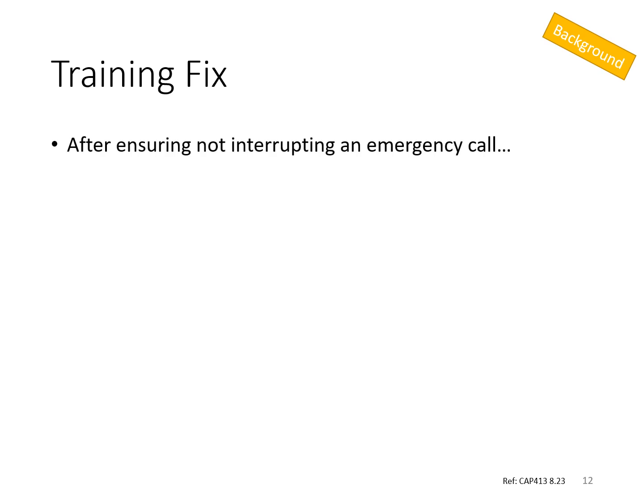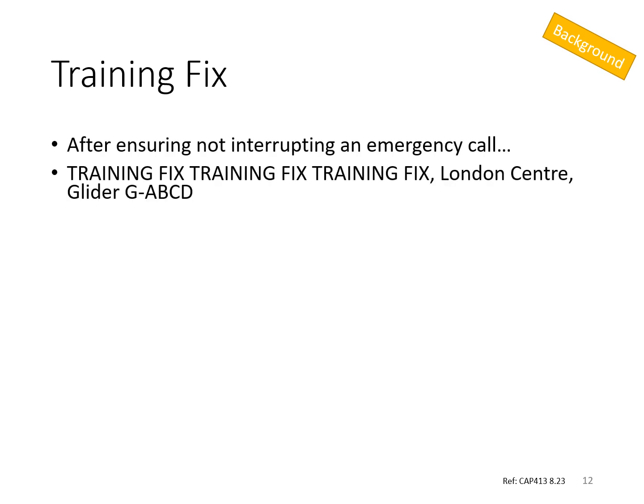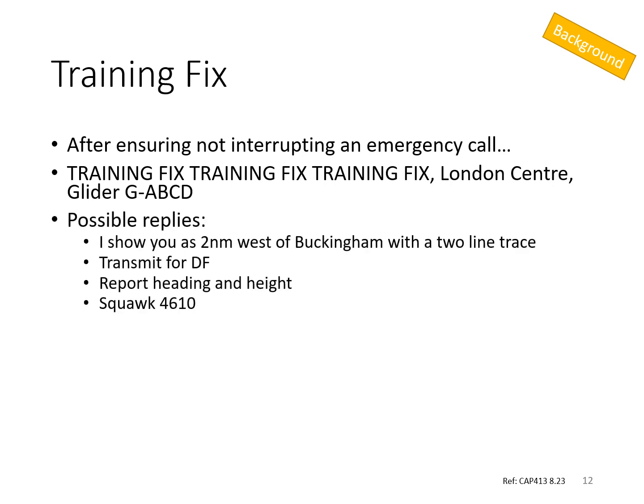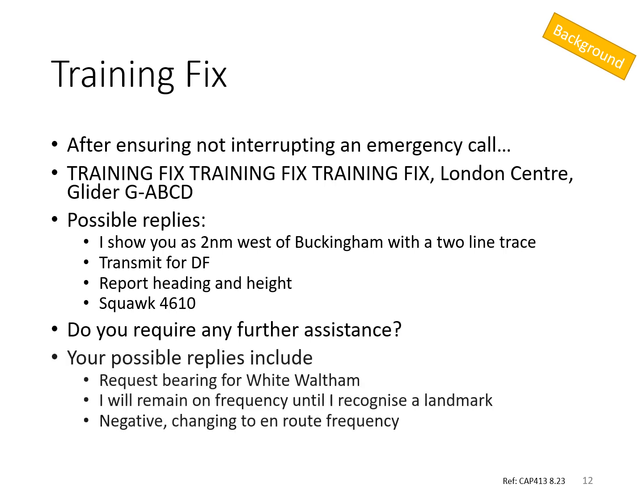London Centre provide a service called a Training Fix. They use direction finding from a number of stations to plot your position, then they can provide help. Training Fix, Training Fix, Training Fix. London Centre, Glider Golf Alpha Bravo Charlie Delta, Training Fix. The reply: Glider Golf Alpha Bravo Charlie Delta, I show you as 2 miles west of Buckingham with a 3-line fix. Glider Golf Alpha Bravo Charlie Delta, roger. Glider Charlie Delta, do you require any further service? Glider Charlie Delta, negative, changing en route. Glider Charlie Delta, roger.